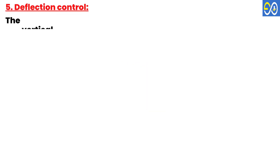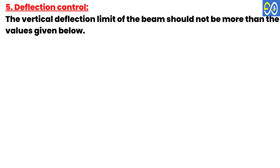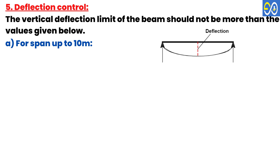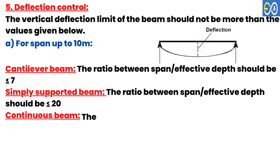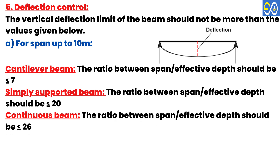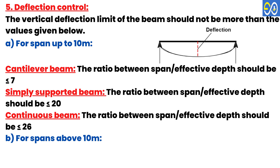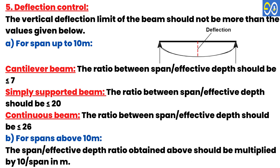Deflection Control: The vertical deflection limit of the beam should not exceed the following values. For spans up to 10 meters — cantilever beam: span/effective depth ≤ 7; simply supported beam: span/effective depth ≤ 20; continuous beam: span/effective depth ≤ 26. For spans above 10 meters, the span-to-effective-depth ratio obtained above should be multiplied by 10 divided by the span in meters.